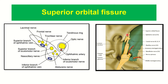So it is easy to remember that cranial nerves 3, 4, 5-one, and 6 pass through the superior orbital fissure. Some other structures such as the superior ophthalmic vein also pass through here, along with the lacrimal, frontal, and trochlear nerves running through this structure.